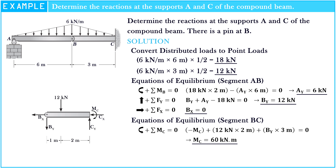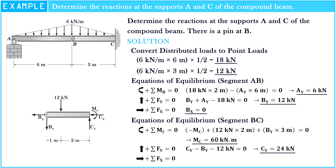The sum of forces along the y-axis is equal to zero. So: Cy minus By minus 12 kN is equal to zero. Hence, Cy is equal to 24 kN. The sum of forces along the x-axis is equal to zero. So: Cx minus Bx is equal to zero. Hence, Cx is equal to zero.